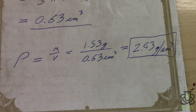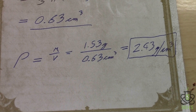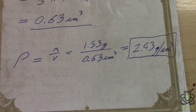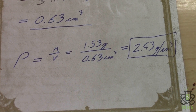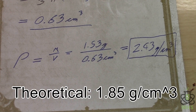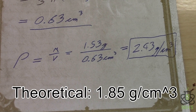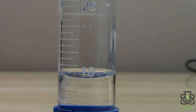Density is mass divided by volume, so we get 0.53 divided by 0.63, which gives us 2.43 grams per cubic centimeter. That's actually really far off of the theoretical value — the length measurements were pretty crude; if I had calipers that would be much more accurate. I'm pretty confident in my scale's weight measurement, so let's try different ways to measure the volume.